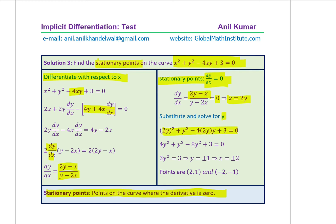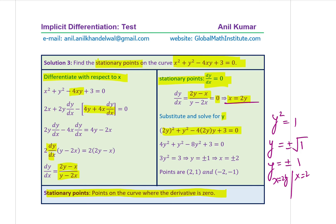Substituting x equals 2y into the equation: (2y)² + y² - 4(2y)(y) + 3 = 0. Opening the bracket gives 3y² equals 3, so y² equals 1, and y equals ±1. For each value of y, using x equals 2y gives x equals ±2. So there are two stationary points: (2, 1) and (-2, 1).